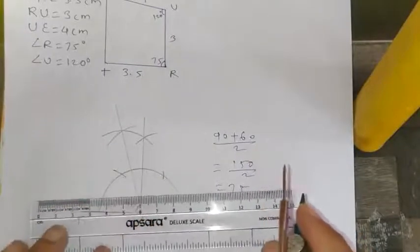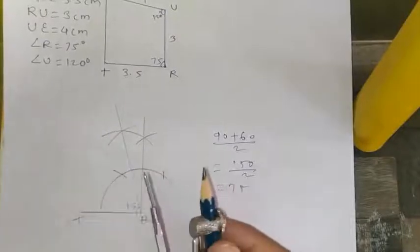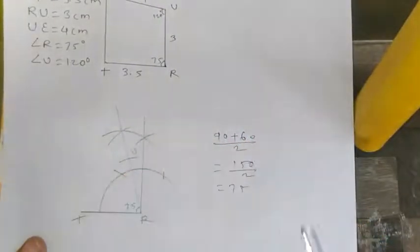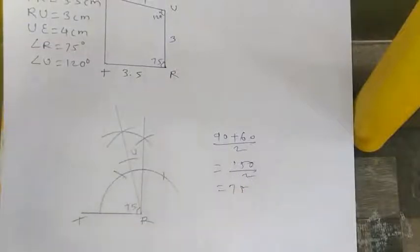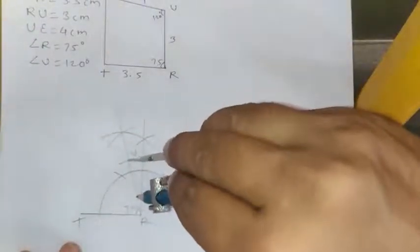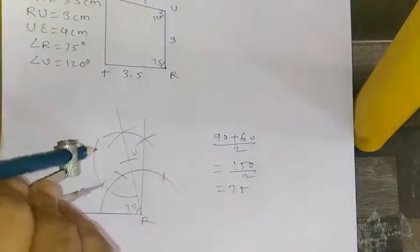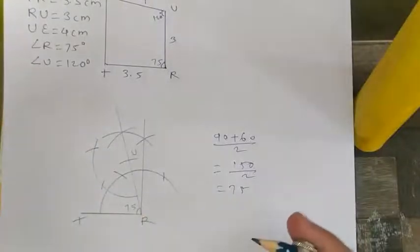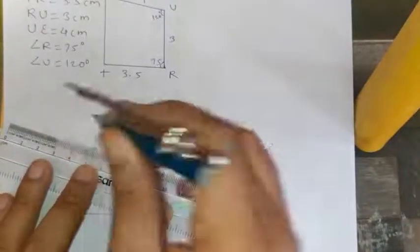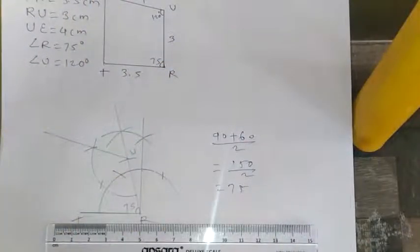This side RU is 3 centimeters. Make R as center with radius 3 centimeters to get point U. At point U, the angle is 120°. Using the compass, make a large arc touching the line, mark 60° and then 120° by cutting again. Draw a line from U through that 120° intersection.